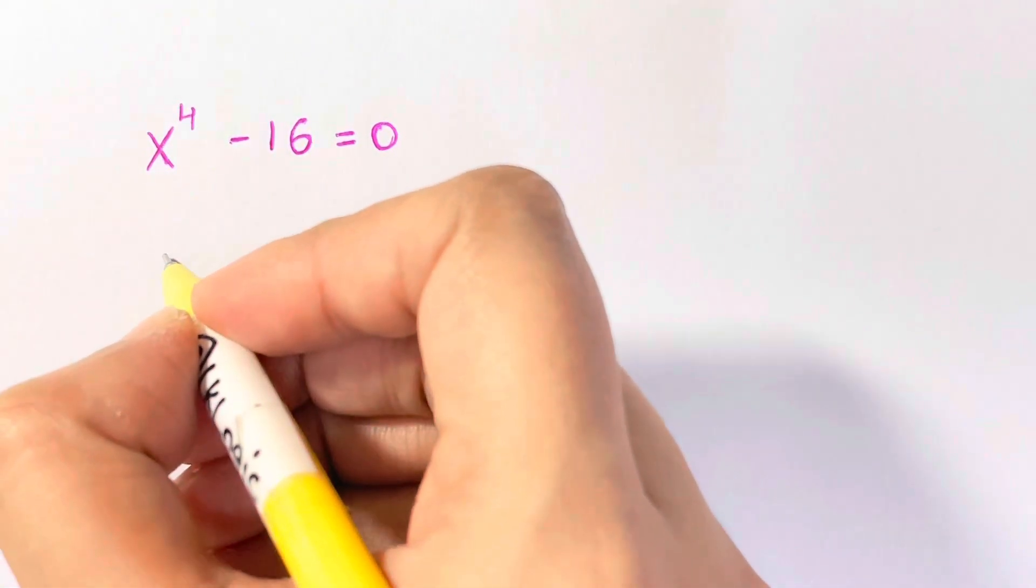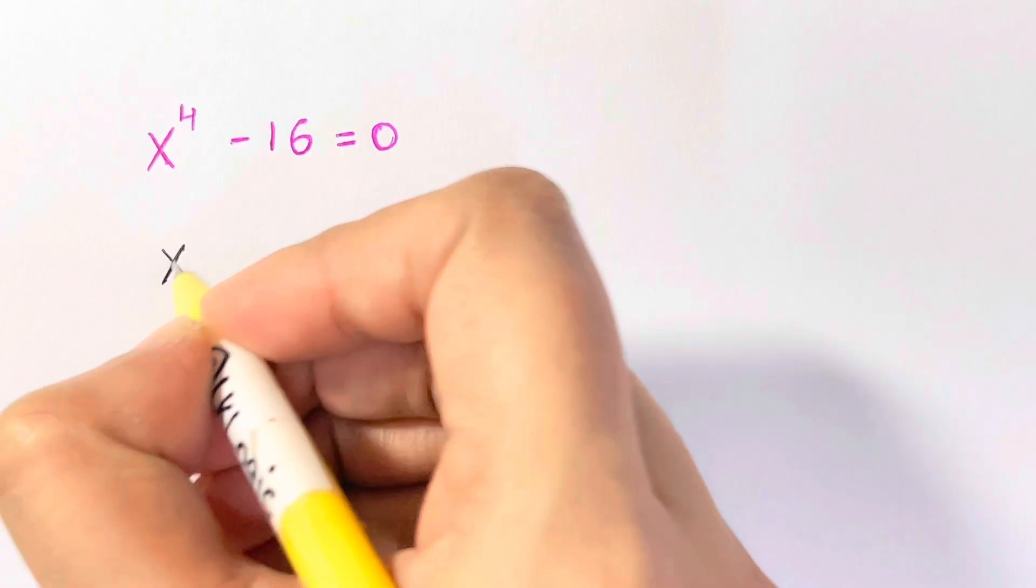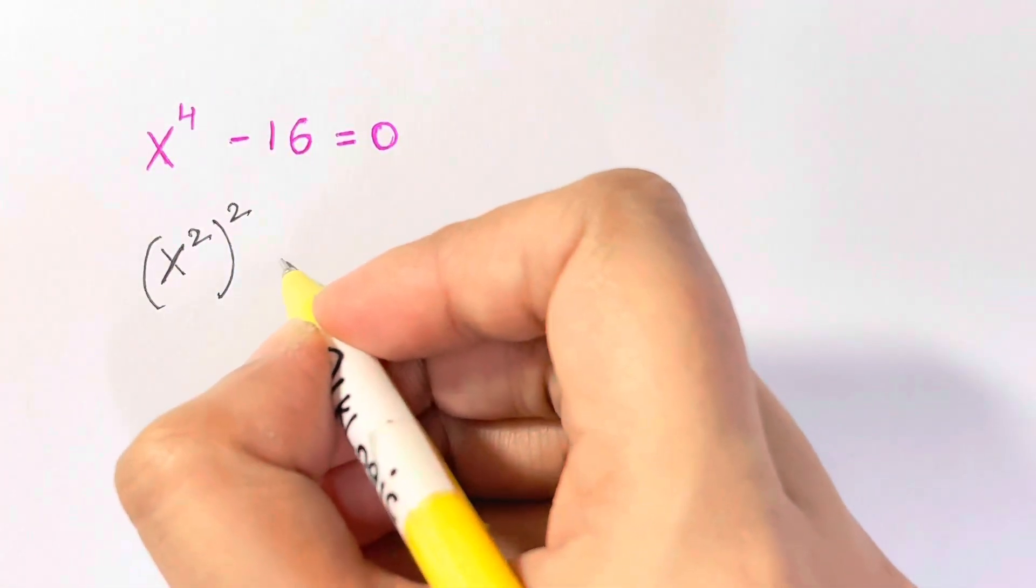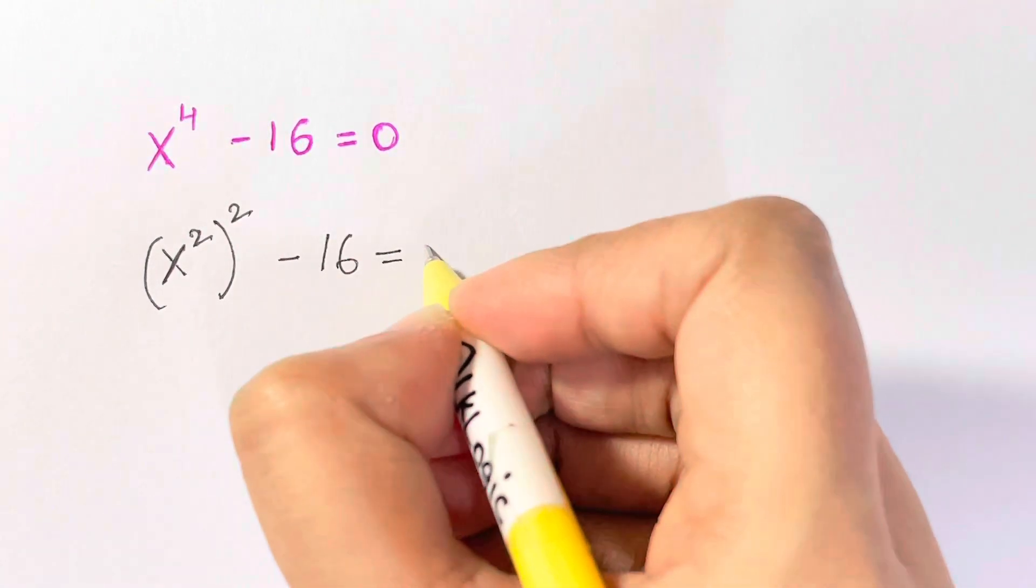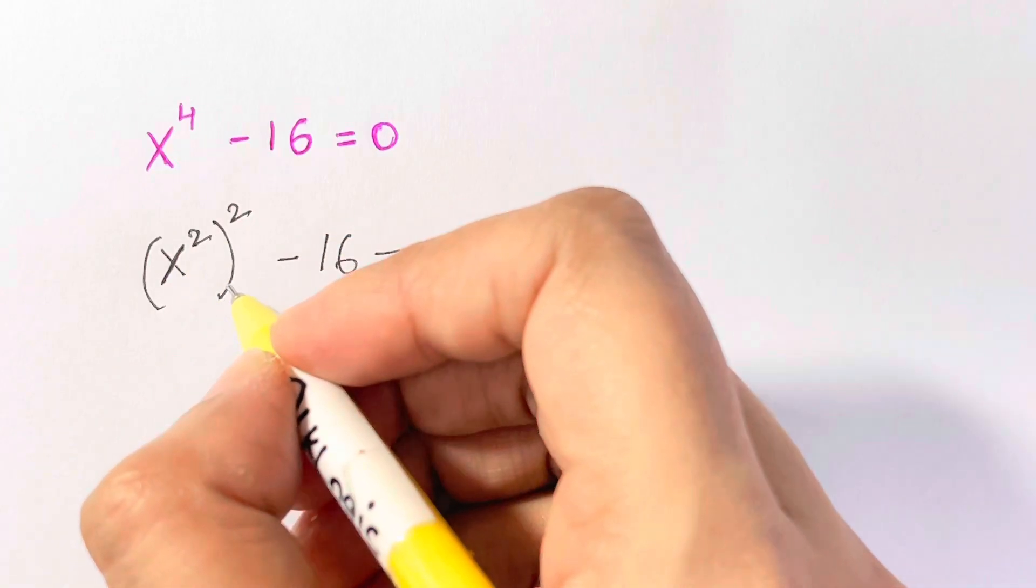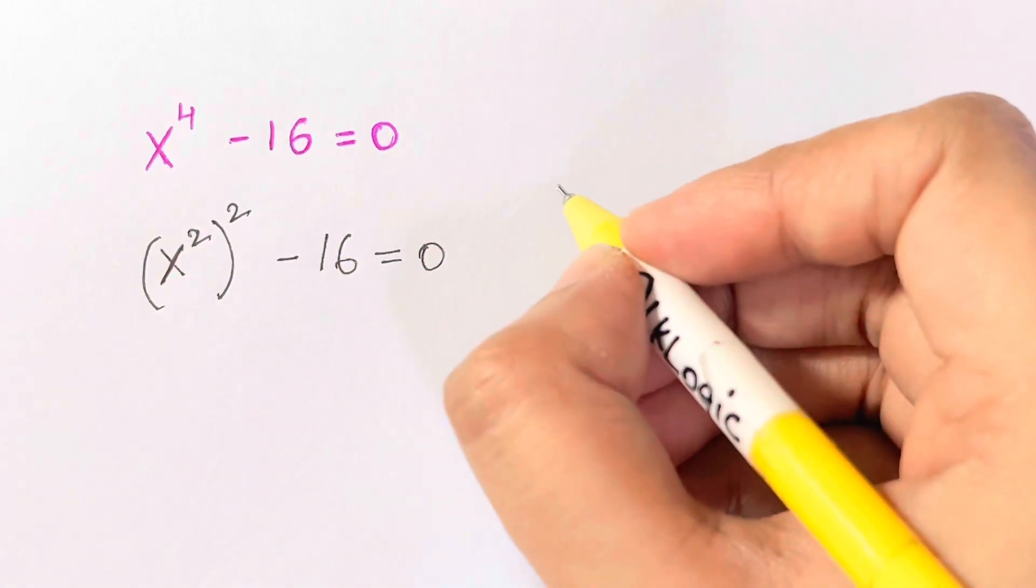First of all, we're going to break this down into x squared, the whole squared, minus 16 is equal to 0. Now as you can see, this is in the form of a squared minus b squared.